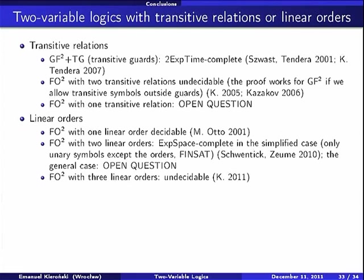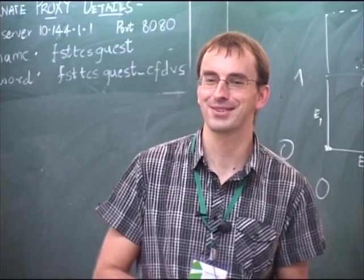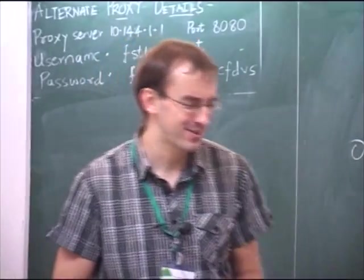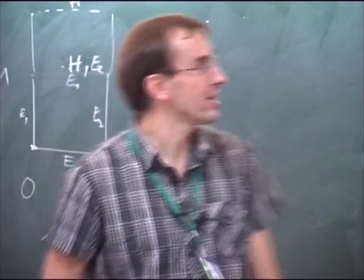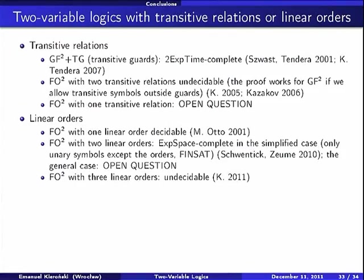And it is interesting that the case of FO2 with one transitive relation is up to my knowledge open. I tried to solve it at least two or three times, and it is quite difficult. The combinatorial nature of the models is quite complicated. So up to my knowledge, this is open. One transitive relation in FO2, a simple question. We do not know even if it is decidable.